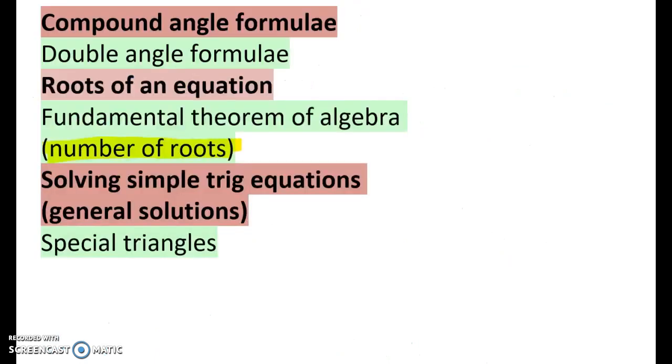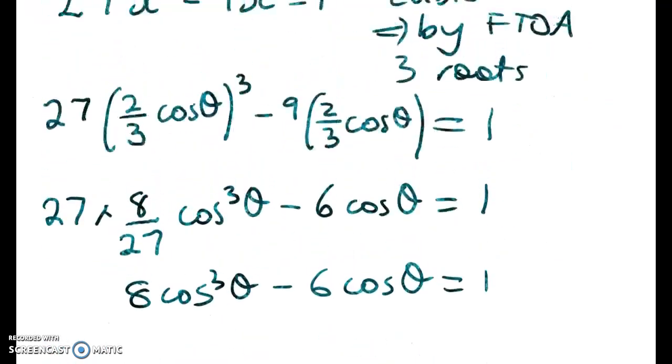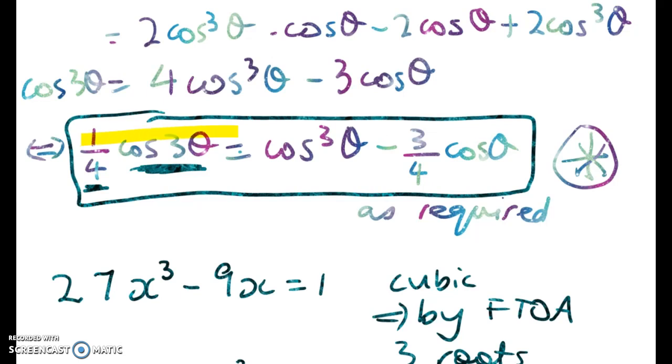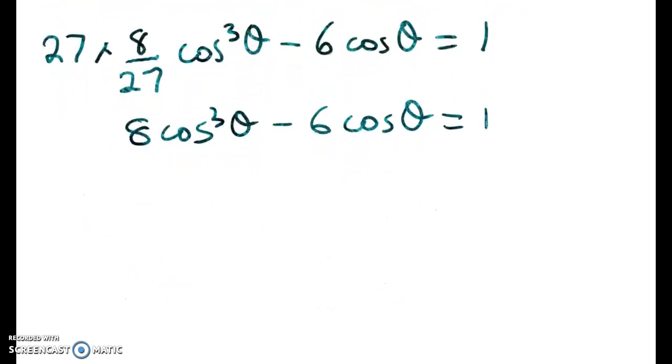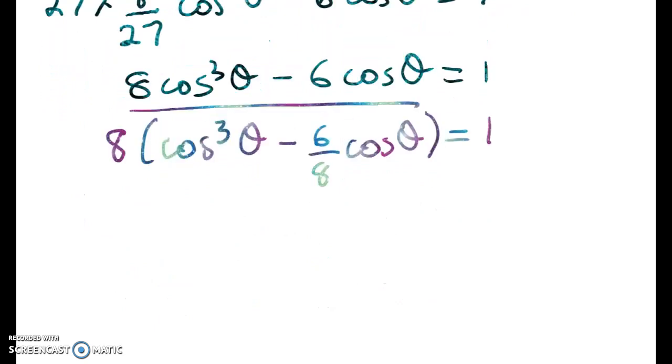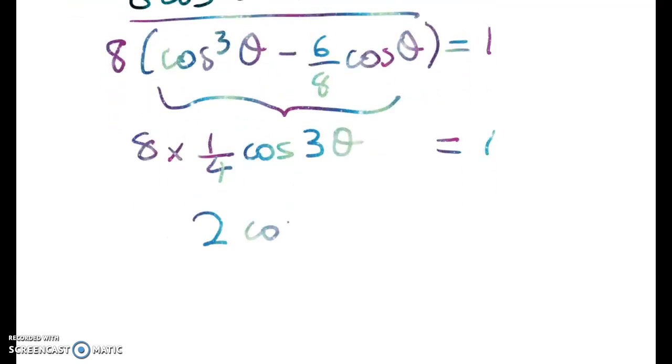Well, we had this thing here which said that one quarter of cos 3 theta is equal to this. So we must be able to take this bit here and rewrite my left hand side so that I've got a 3 theta. And that's pretty easy to do because this bit in here is equal to one quarter cos 3 theta. So I've got 8 times one quarter cos 3 theta is equal to 1. So we're getting down to a really straightforward little trig equation: 2 cos 3 theta is equal to 1, giving me cos of 3 theta is equal to 1 half.